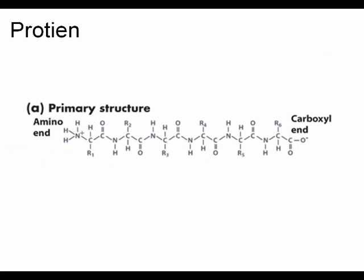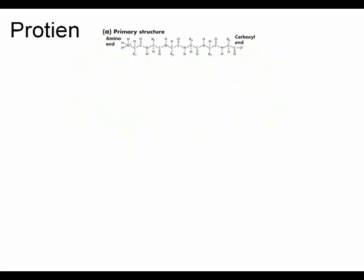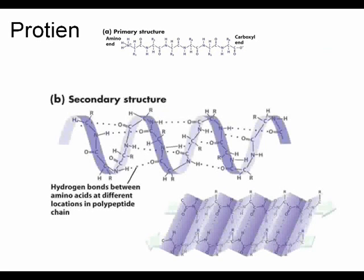The primary structure of a protein is a chain of amino acids linked together by peptide bonds. A peptide bond is created via condensation reactions, and they are covalent. A secondary structure is then formed when hydrogen bonds form between the nearby amino acids in the primary structure. They either fold into a sheet — the beta-pleated sheet — or they coil into an alpha helix.